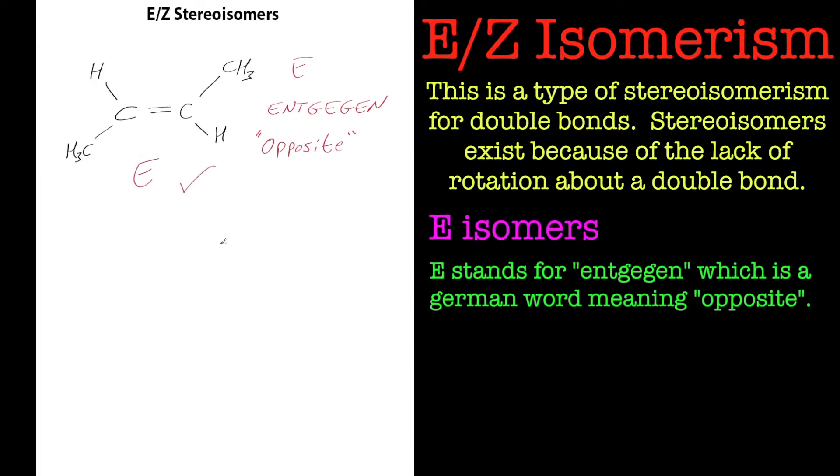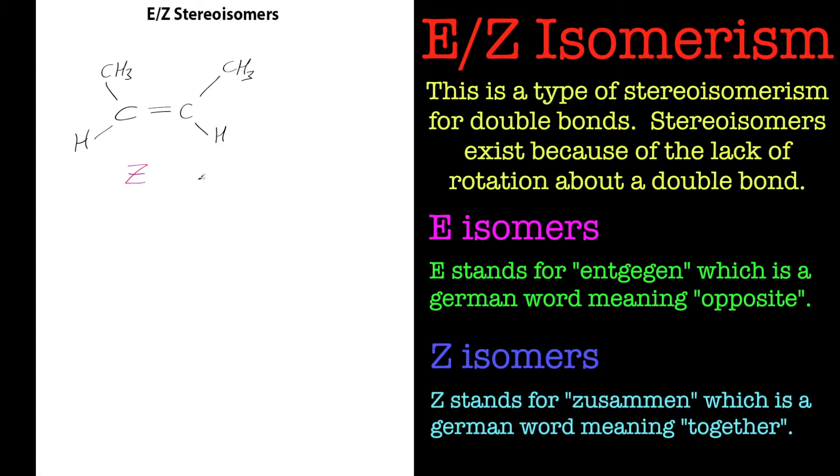Entgegen actually means opposite side. This particular one was E. If we put them on both sides we'll be able to identify as cis, because that means together, from the Latin meaning together. But if we look at E or Z nomenclature, Z just means it's on the same side. Z comes from the word zusammen, meaning together in German.